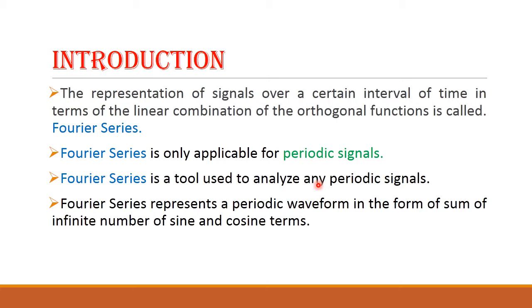If you want to know what is meant by periodic and aperiodic signals, the link is given in the description box — you can refer to it. Fourier series represents a periodic waveform in the form of a sum of an infinite number of sine and cosine terms.